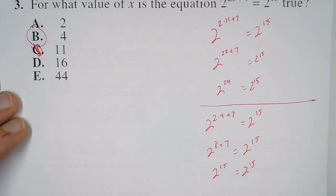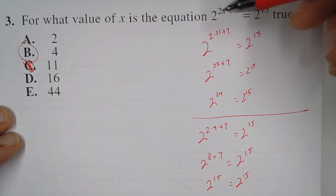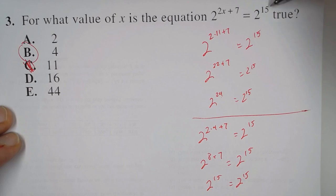Another way to approach this problem: these two numbers are equal. We're saying 2 to a power equals 2^15. The bases are the same. So if 2 to a power equals 2^15, then this power has to equal 15.